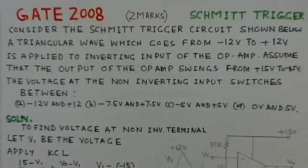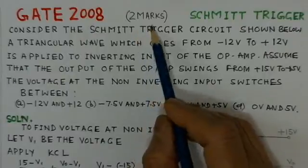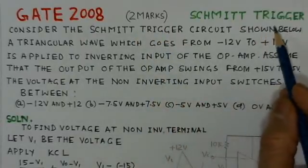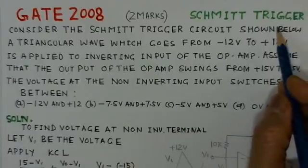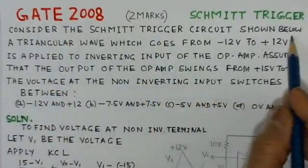Now we take up another gate problem, and this is of gate 2008. This problem is of two marks and it's also based on the Schmidt trigger. We'll read out the problem here. Consider the Schmidt trigger circuit shown below.